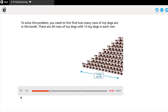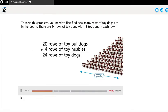To solve this problem, you need to first find how many rows of toy dogs are in the booth. There are 24 rows of toy dogs with 13 toy dogs in each row.